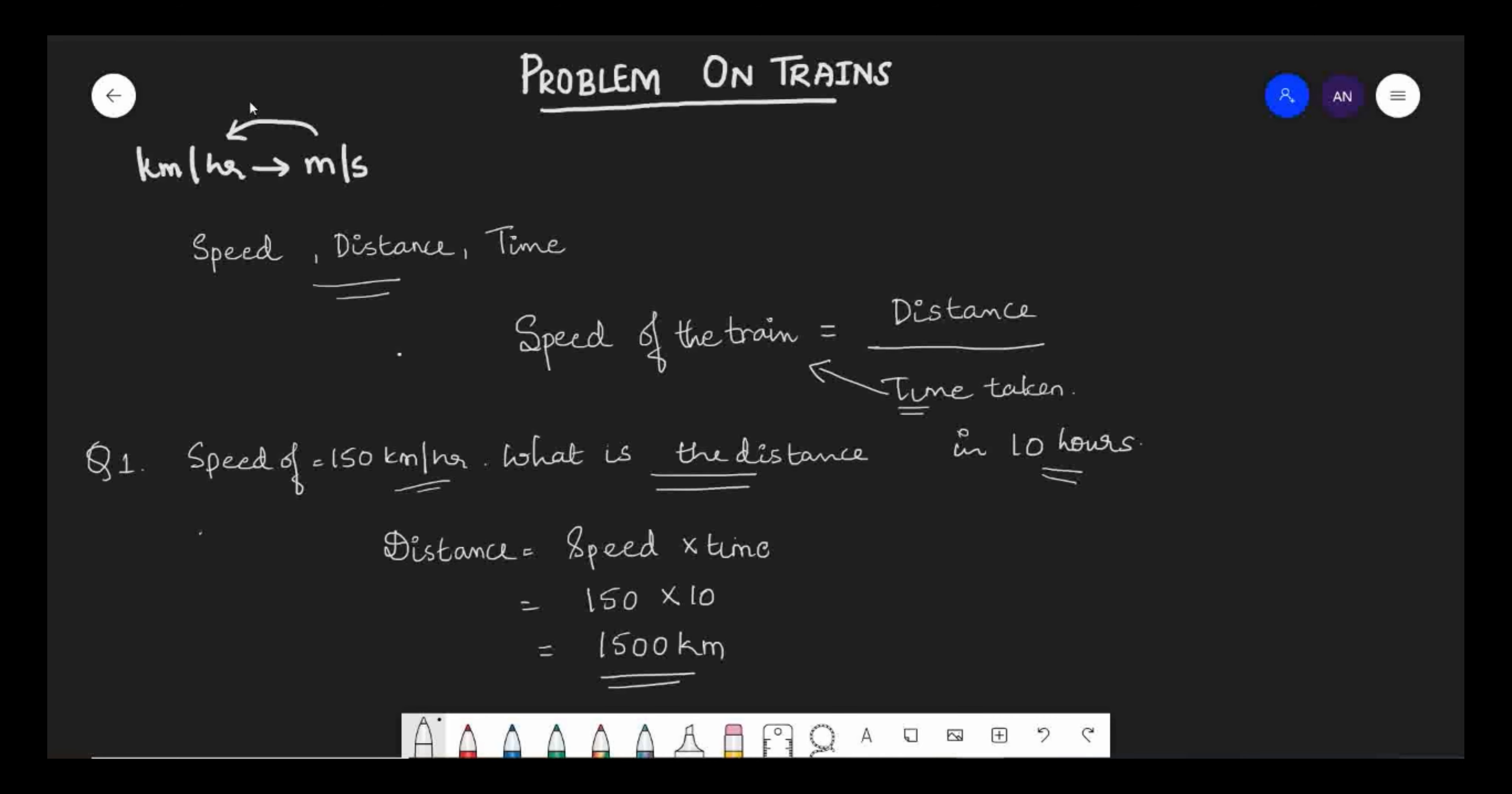So I hope you understood how to find speed of the train: distance by time taken. You are just going to shuffle the terms whichever is asked. Now if they ask for time, you put time here and bring speed to the denominator.